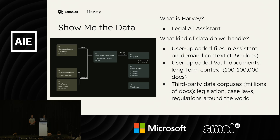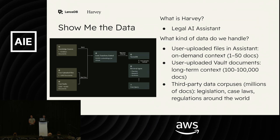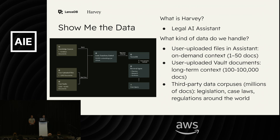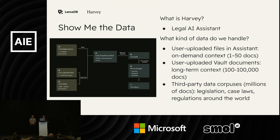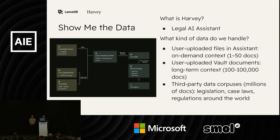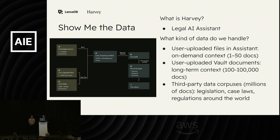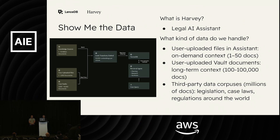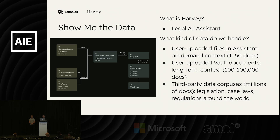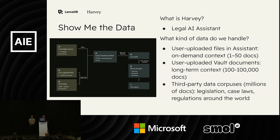A big part of that is processing data across different volumes and forms. We have an assistant product for on-demand uploads in the one-to-fifty document range. We have vaults, which are larger-scale project contexts — like a big deal or data room where you need all contracts, litigation documents, and emails in one place. And the third, largest scale is data corpuses: knowledge bases like legislation and case law for a particular country, including laws, taxes, and regulations.